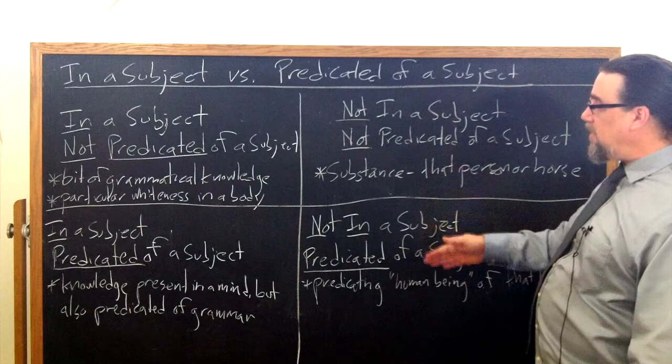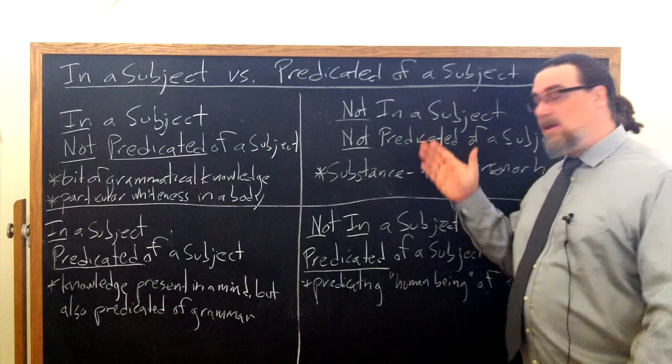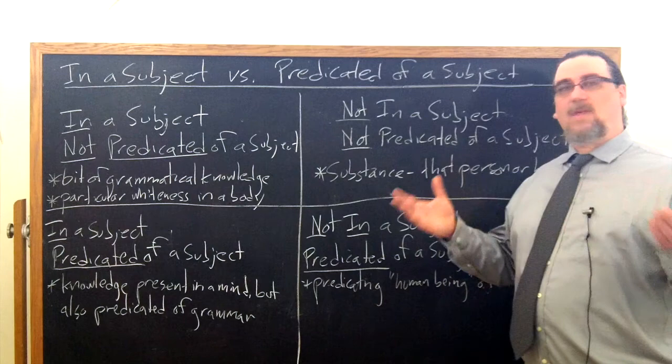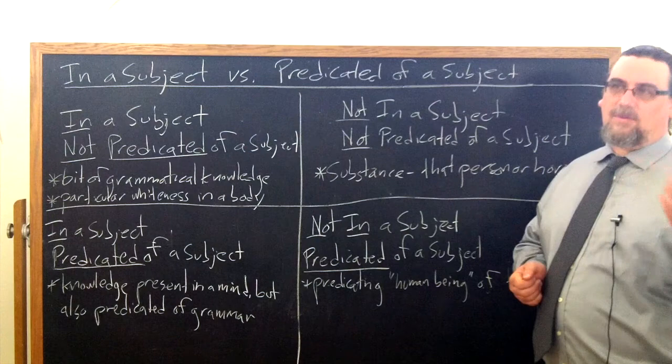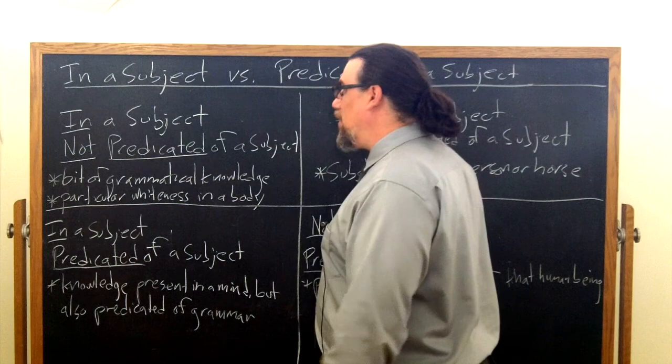So hopefully that is clear. And you see the difference between these, right? Subjects, we don't predicate them of anything. Things are predicated of subjects, including the name of the subject or the kind of thing that the subject is. Its qualities, its quantity. We're going to get to all that sort of stuff in another video where we talk about the categories per se.